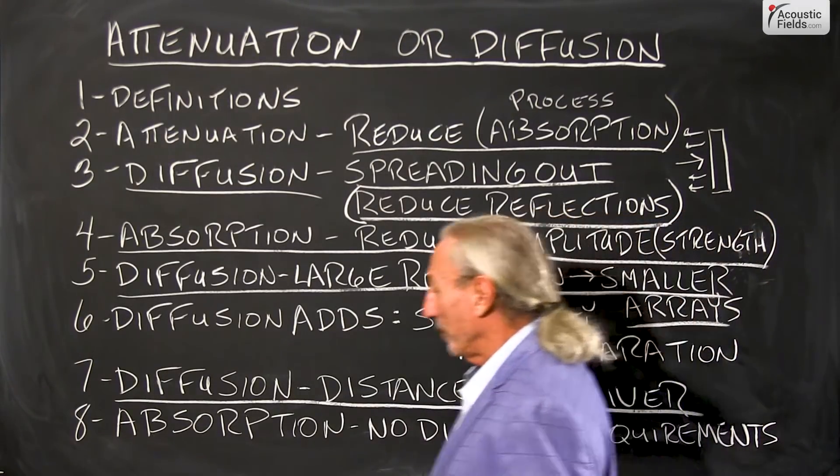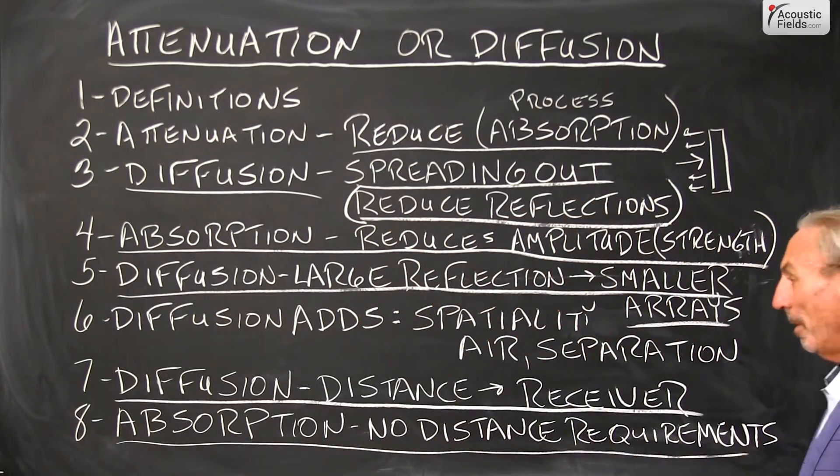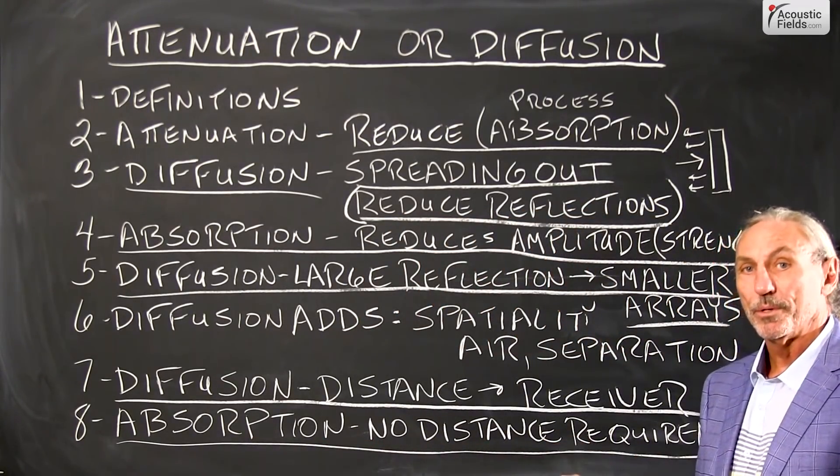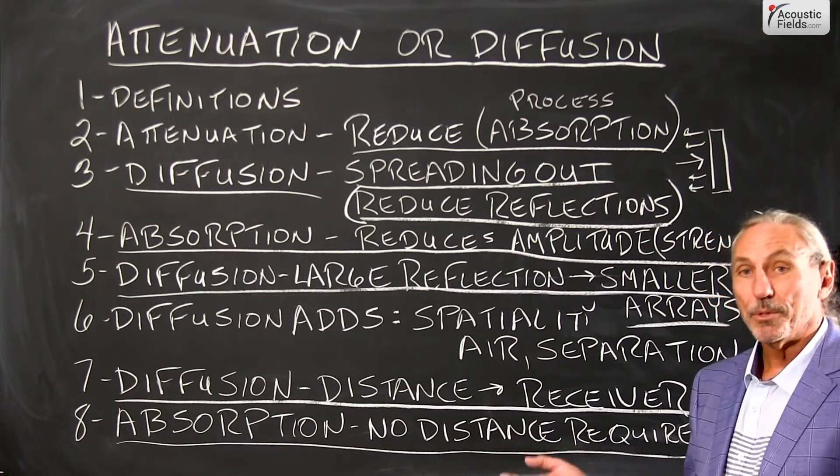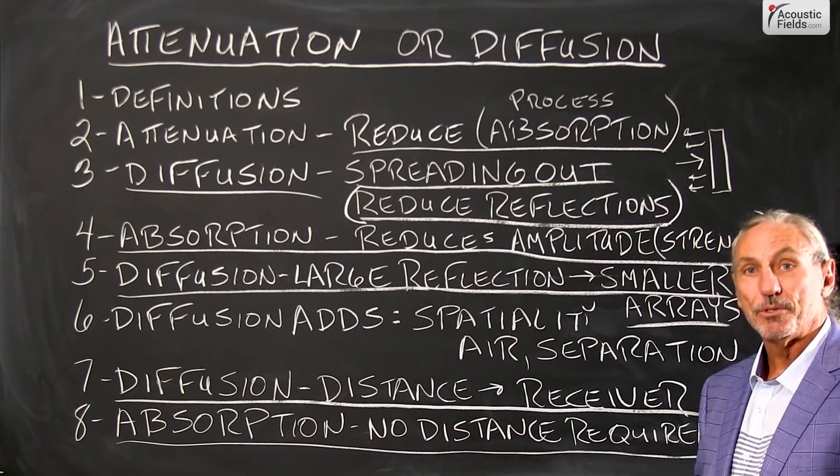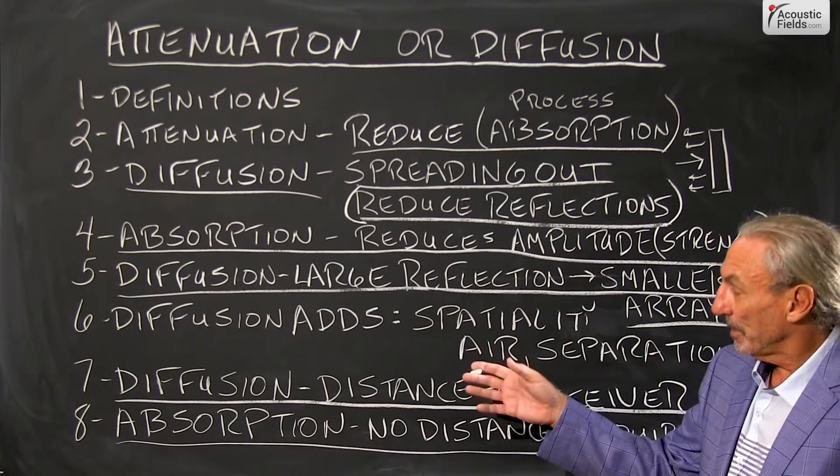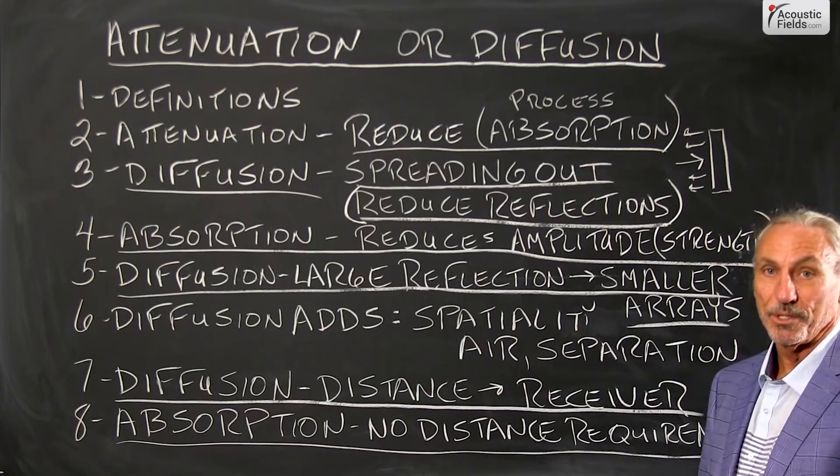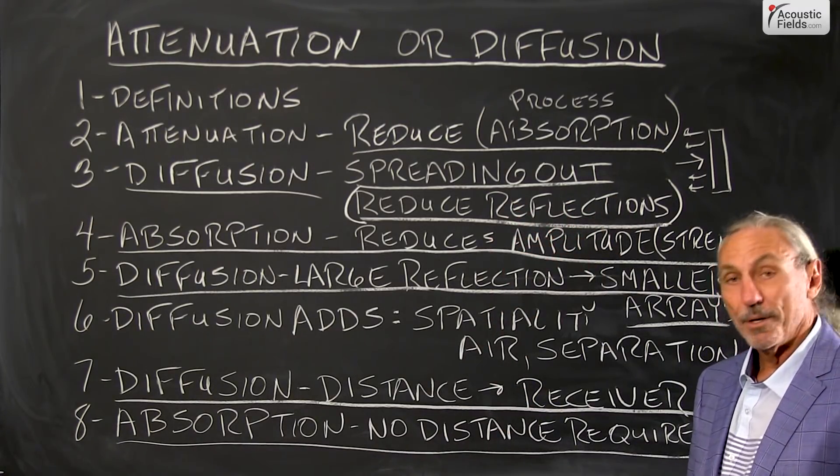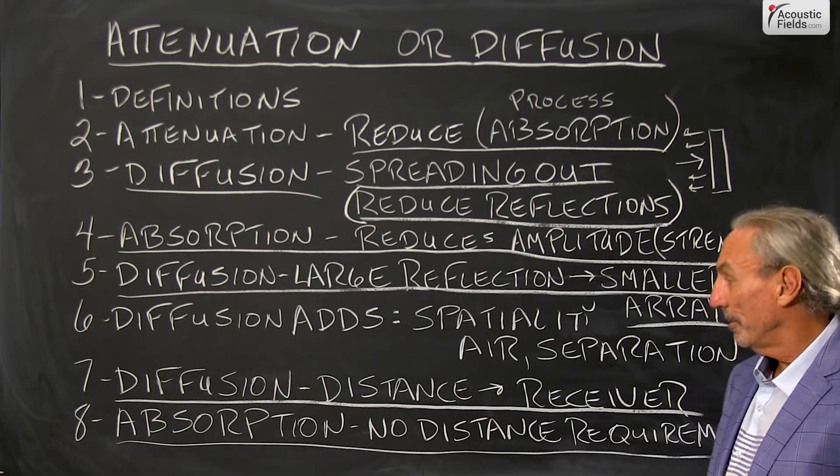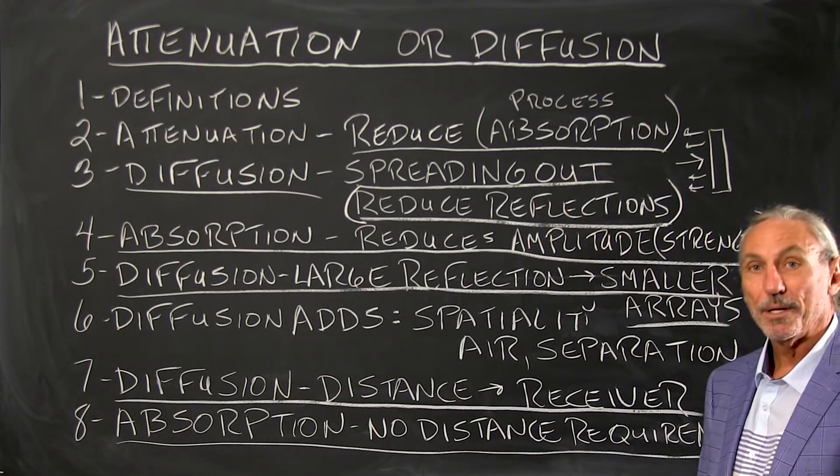So absorption is good when we don't have the distance requirement. So if we're in tighter quarters, our speakers are closer to the wall. Some people use absorption, some people use diffusion on the side walls. It depends what your usage. But diffusion is distance related where absorption is not. So two tools that we can use in our acoustical processes.